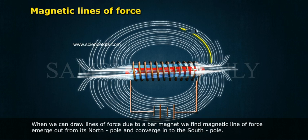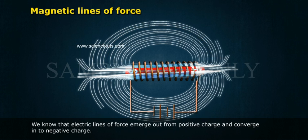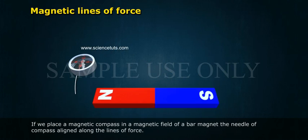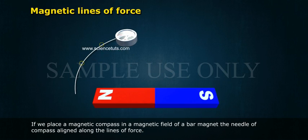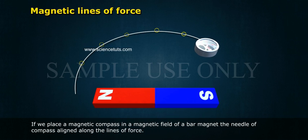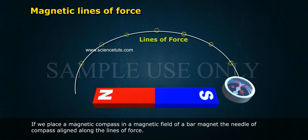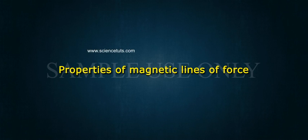When we draw lines of force due to a bar magnet, we find that magnetic lines of force emerge out from its north pole and converge into the south pole. We know that electric lines of force emerge out from positive charge and converge into negative charge. If we place a magnetic compass in the magnetic field of a bar magnet, the needle of the compass aligns along the lines of force.